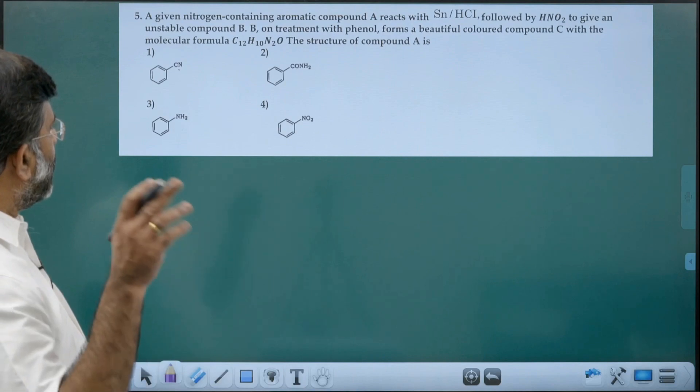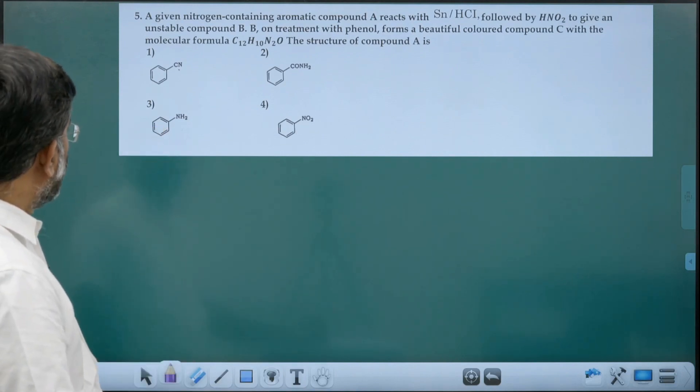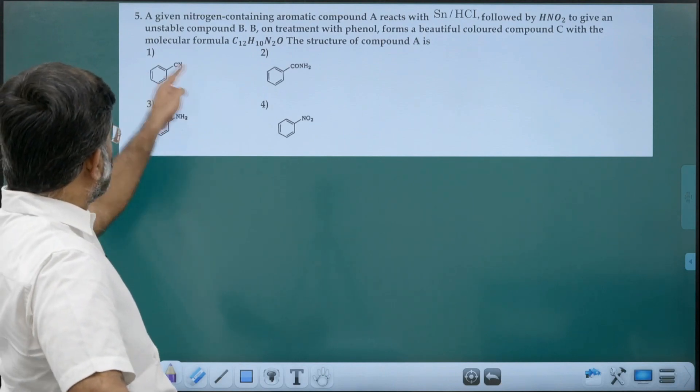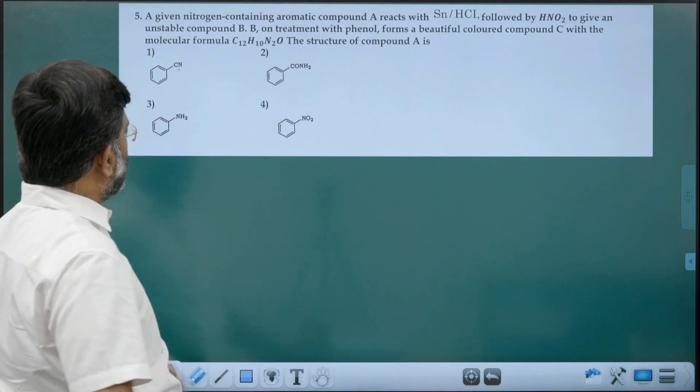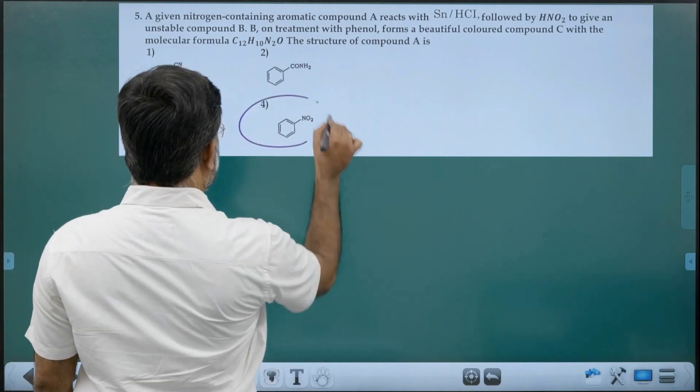Option C. A reacting with tin and HCl usually could be this or this, but the investigation will tell you this is the answer.